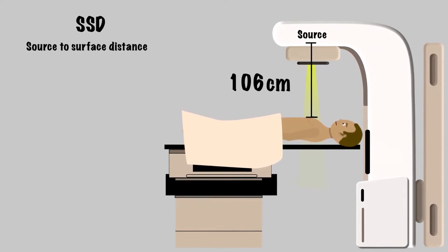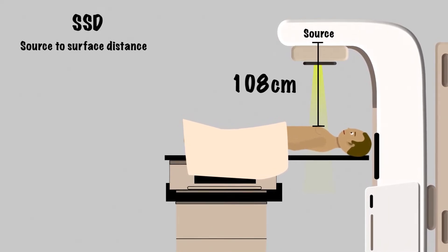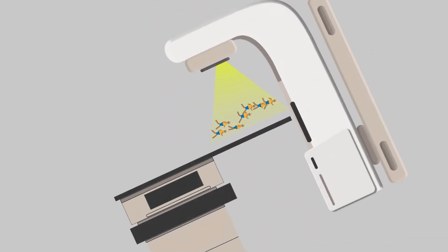The beam is diverging, so its intensity will decrease as we move away from the source. Think of the photons as runners starting a race. Everyone is clustered together, but as you leave the starting line, everyone starts to spread out.